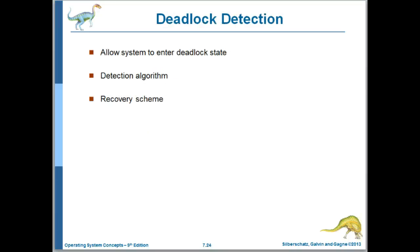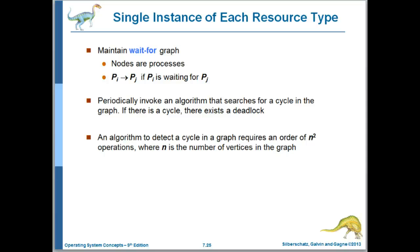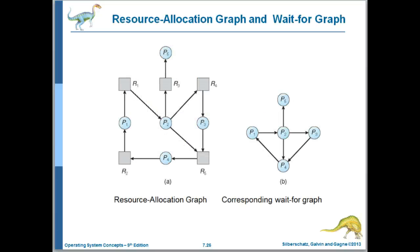Moving on to deadlock detection and recovery — we allow the system to enter a deadlock state, and at some interval we run a detection algorithm. If we detect a deadlock, we take steps to recover. Assuming we have only a single instance of each resource type, we can collapse the resource allocation graph into a wait-for graph and run an algorithm to detect cycles. If a cycle is detected, we're deadlocked. The figure on the left shows the resource allocation graph, and the figure on the right shows the corresponding wait-for graph. We can see one cycle, two cycles, three cycles.